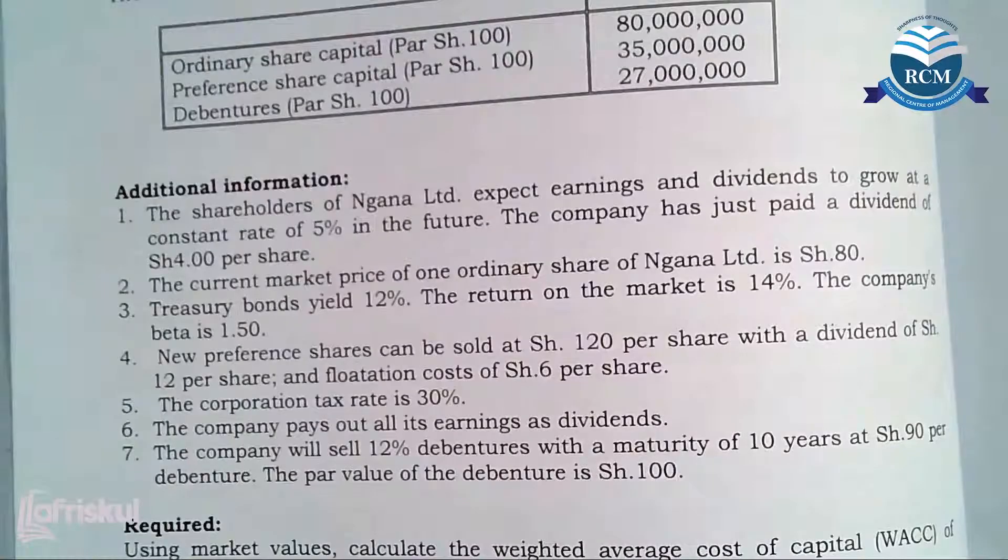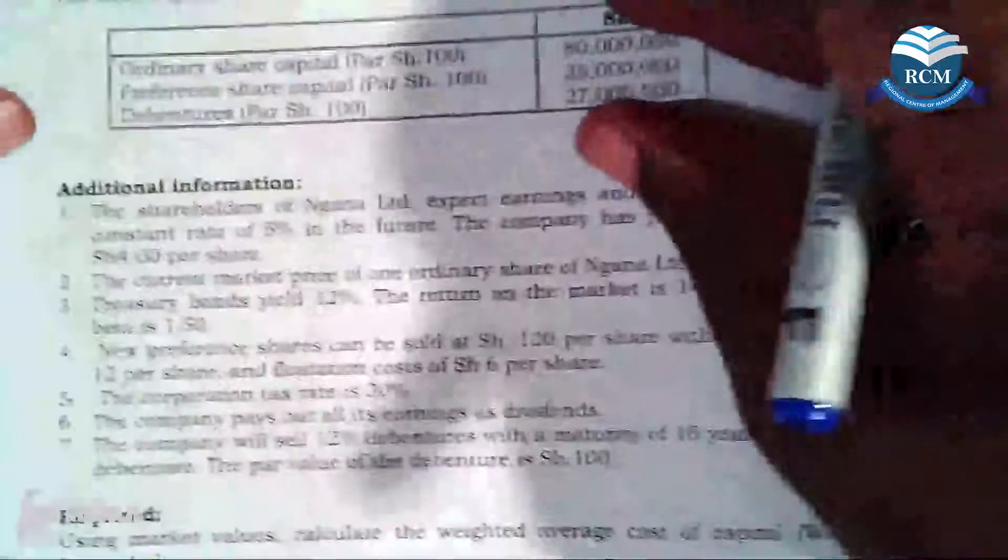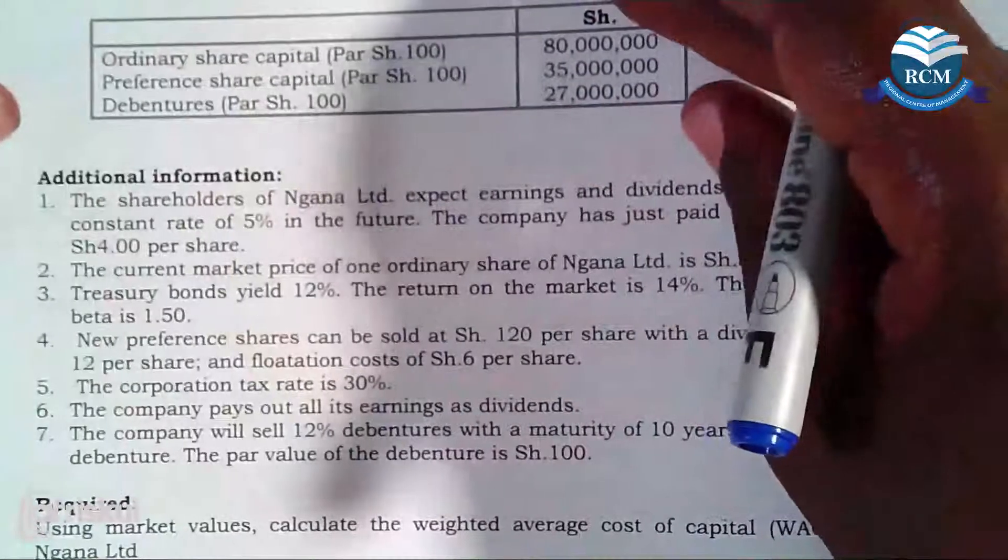Cost of debt which is redeemable using the yield to maturity period. Now ladies and gentlemen, this May 2014 question number 4b, you can see from the capital structure the debt is 27 million.